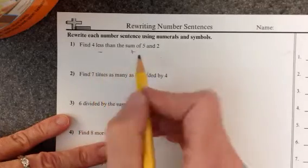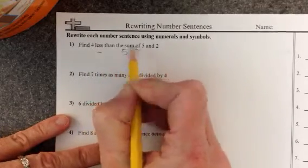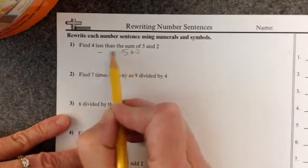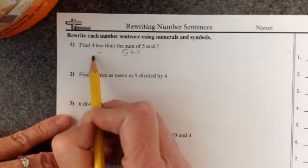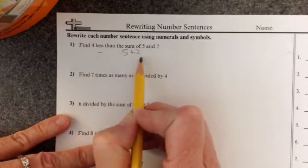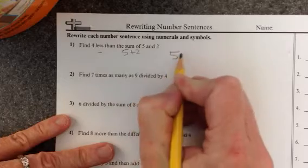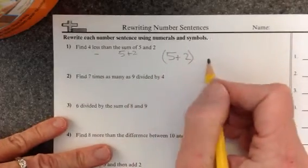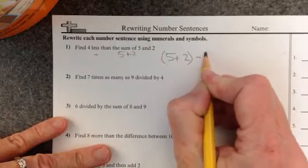So we'll have 5 plus 2 here. But this says find 4 less than this number. So we can't do 4 minus 5 plus 2. That wouldn't be 4 less. So we're going to take 5 plus 2 and we'll put it in parentheses to show to do that first. And then subtract 4.